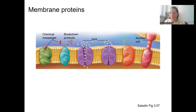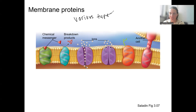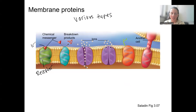A little bit more about membrane proteins. We're going to see them multiple times, but one main point is that there are various types. This one here is binding to a chemical messenger and causing a signal — so this is a receptor, it's receiving a signal. When a chemical messenger binds to a receptor, it's called a ligand. This protein is breaking something down — it is catalyzing a reaction, so it's an enzyme.